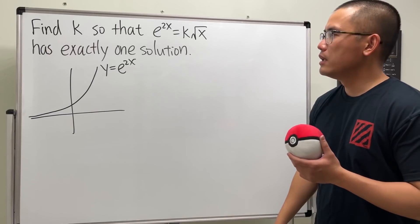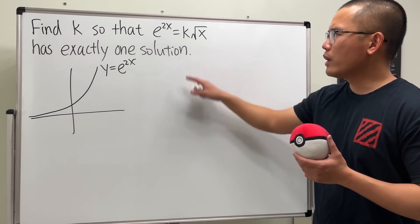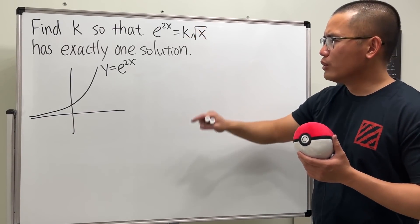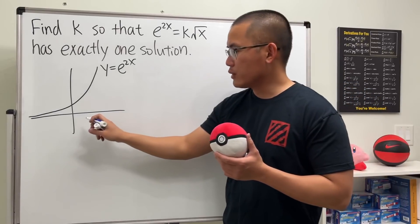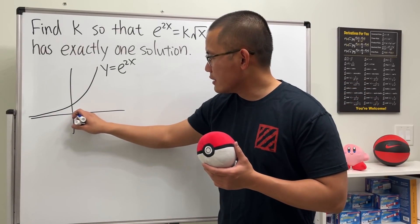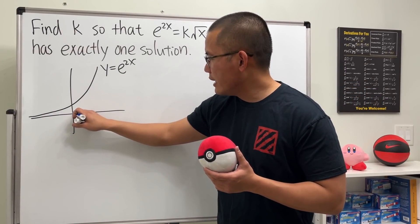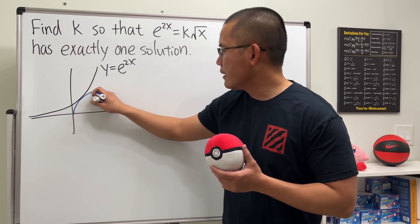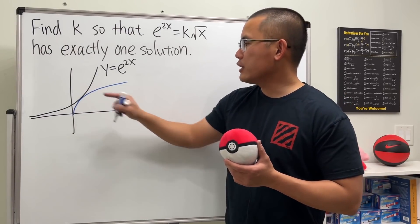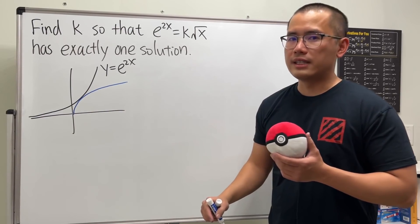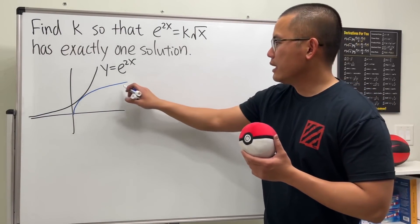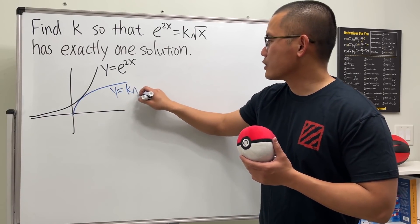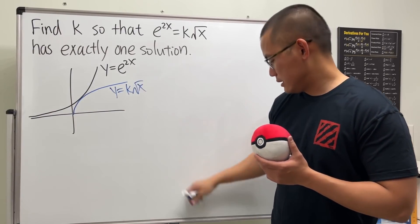We want the right k value so that the curve starts at (0, 0), goes up, and they touch each other at exactly one point. This curve is y = k times the square root of x.